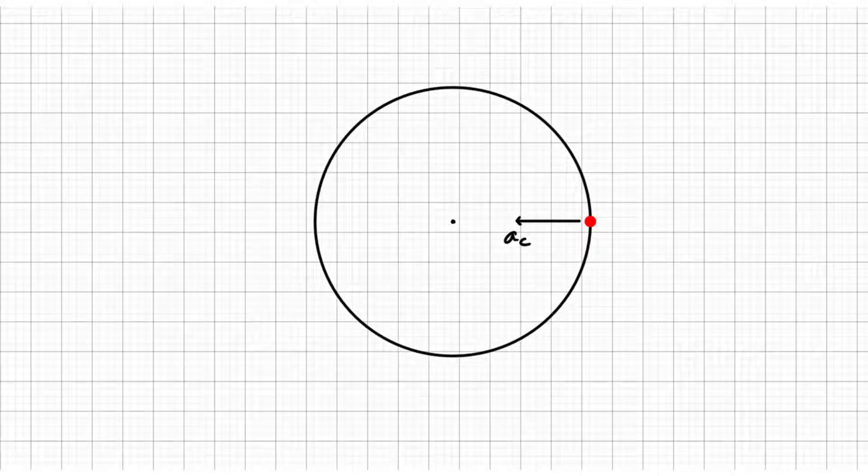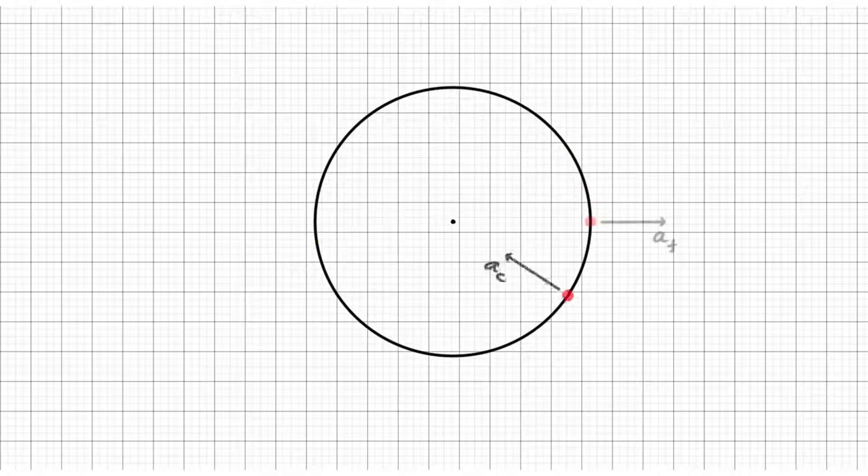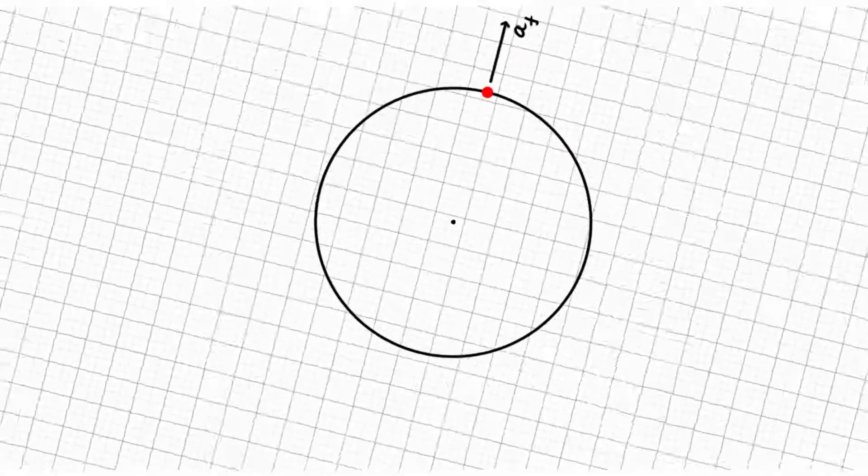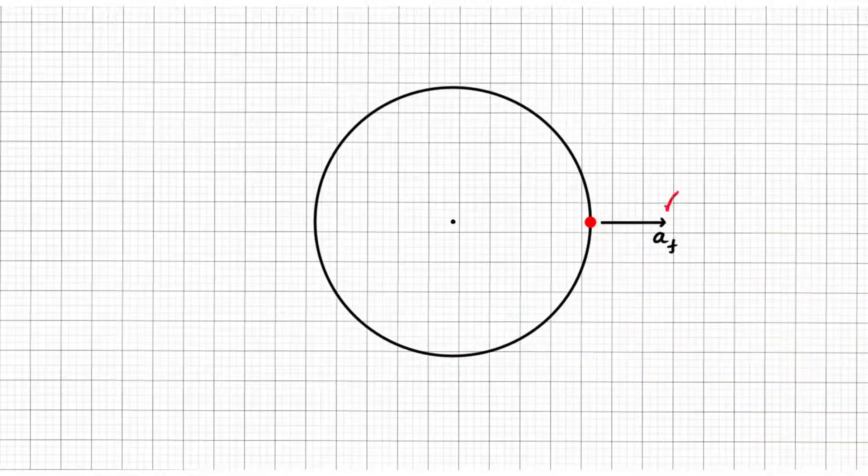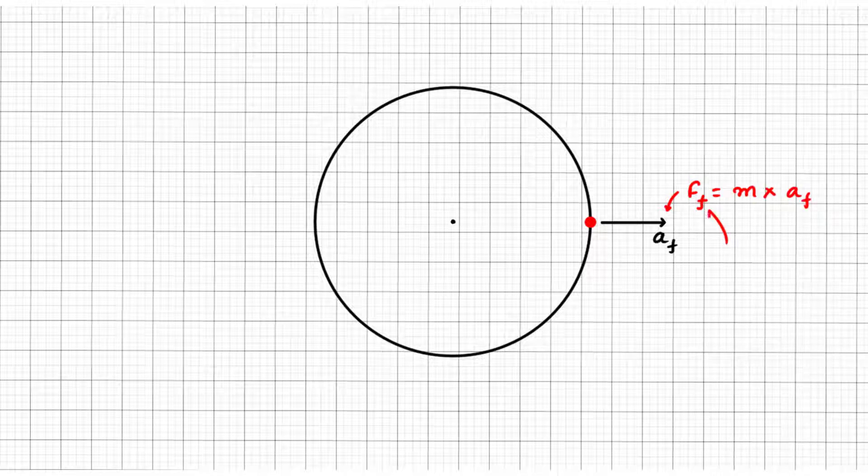This is what it is when we look at it from an inertial reference frame. Now if we look at the particle from the rotating reference frame, or better to say from the particle's reference frame, we will see that an outward force is acting on the particle, and such a force is known as centrifugal force.